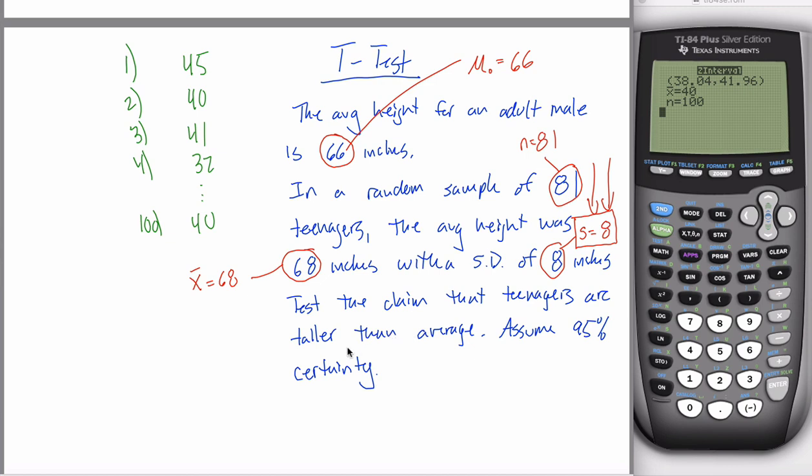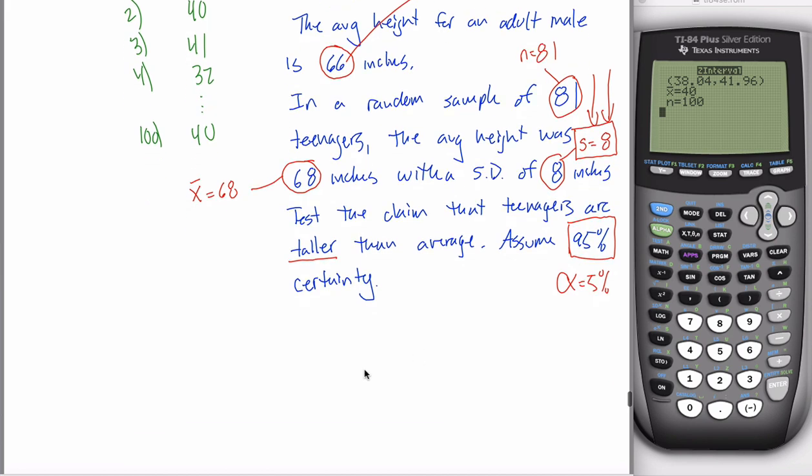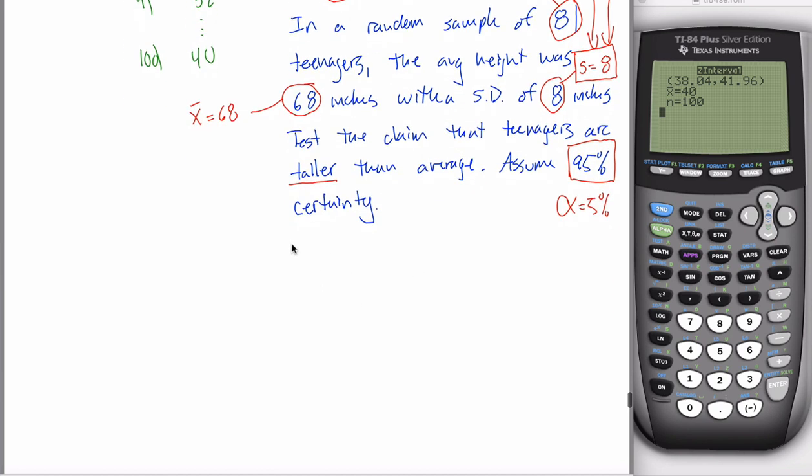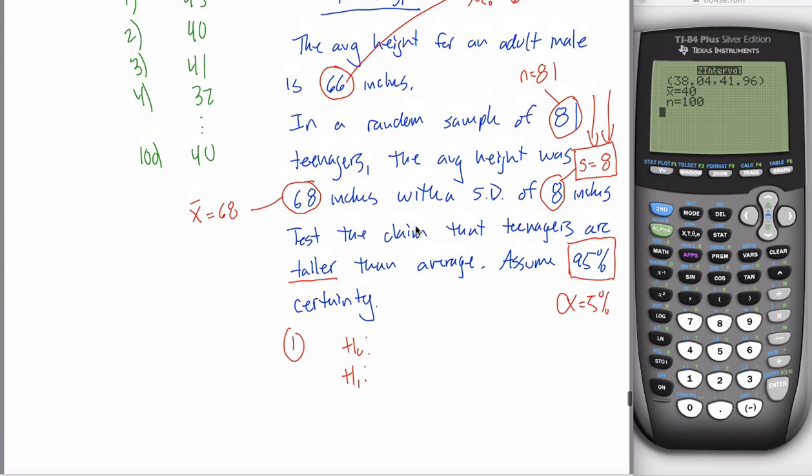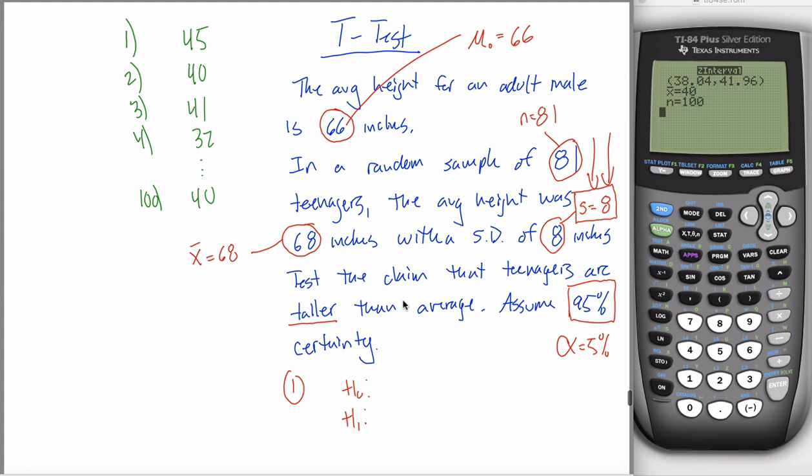Test the claim that teenagers are taller than, so that's going to tell me it's a right-tailed test, and then it looks like we have 95% certainty, so that'll tell me alpha is 5%. State the null and alternative hypotheses, and you'd be really happy if they're identical to what they used to be, because you've spent all that time learning those in 4.3. Good news. They are.